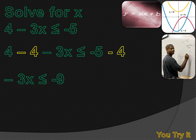Simplifying, I get minus 3x is less than or equal to minus 9. Now I need to get rid of that minus 3 being multiplied times x, so I'll divide both sides by minus 3. But when I divide both sides of an inequality by a negative number, I have to turn my inequality sign around — I have to reverse it.